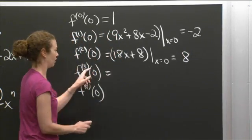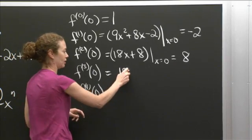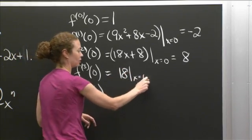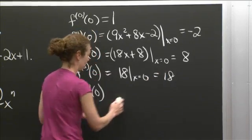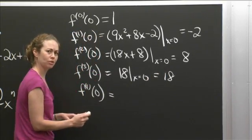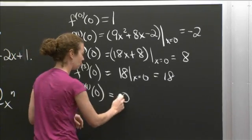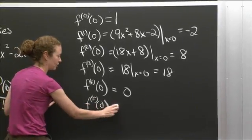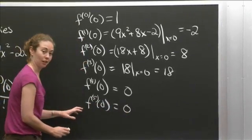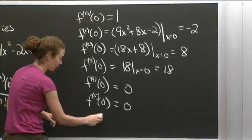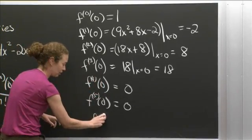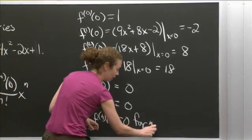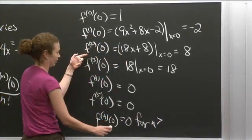OK, and then the third derivative is just 18, evaluated at x equals 0, I get 18. And then the fourth derivative - what's the derivative of a constant function at 0? Hmm, what do you think the fifth derivative is evaluated at 0? Looks like it'll be 0. Looks like the sixth derivative, looks like everything bigger than 3. So the nth derivative at 0 equals 0 for n bigger than 3.